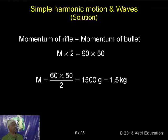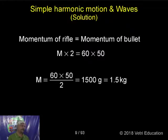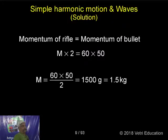That is, the momentum of the rifle is equal to the momentum of the bullet, from which M (the mass of the rifle) can be calculated.